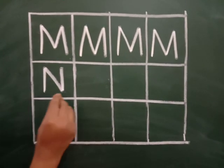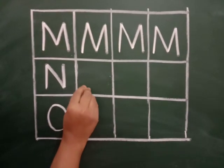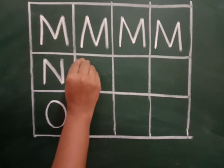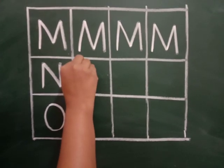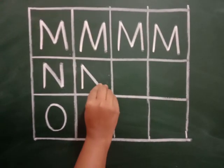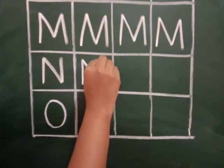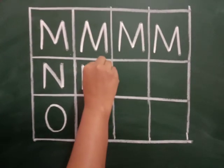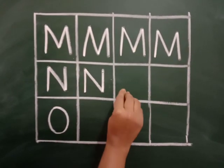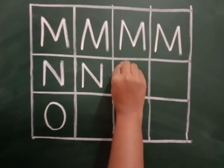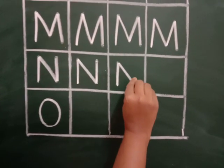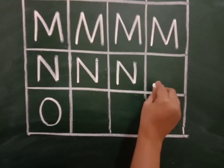Now see here the strokes of letter N. Standing line from down to up, then again down one slanting line, and again up one standing line. This is N. So: standing, slanting, slanting, standing. Letter N.